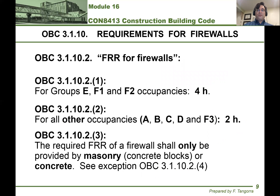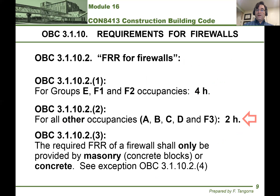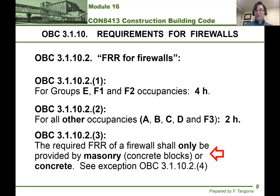In addition to this, the fire ratings of firewalls are fairly substantial. When it comes to E, F1, and F2 occupancies, we're looking at four hours. For A, B, C, D, and F3, it's two hours. This fire rating must only be achieved when you're using masonry or concrete. However, do check up on that exemption that is indicated in the building code for you.